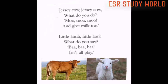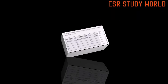Little lamb, little lamb, what do you say? Little lamb — this is a small lamb. What do you say? You say something special. Baa, baa, baa. Let's all play. Little lamb, what do you say? Baa, baa, baa. What do the animals and birds say?